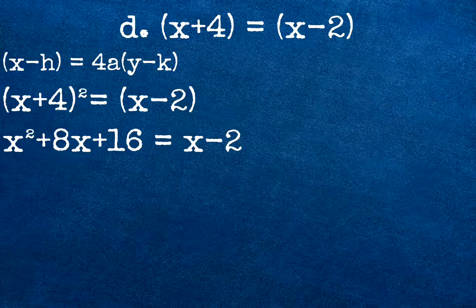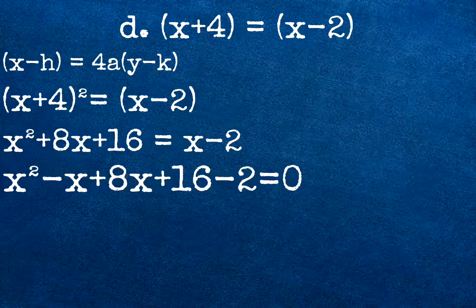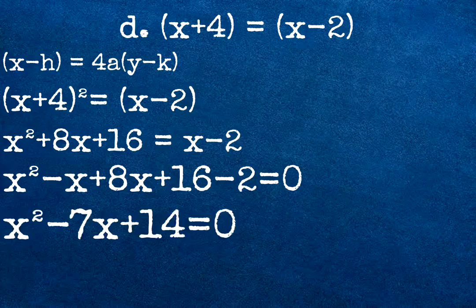Then move x minus 2 to the other side. It will become x squared minus x plus 8x plus 16 minus 2 equals 0. Then simplify to get the answer. Our final answer will be x squared plus 7x plus 14 equals 0.